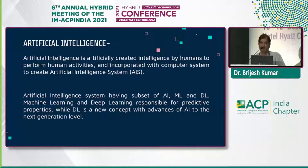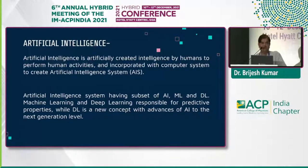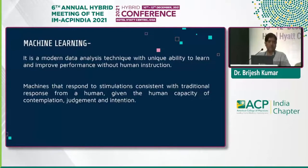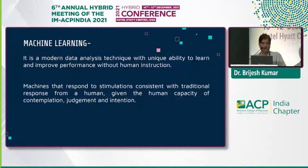Artificial intelligence systems have a subset including machine learning, deep learning, and data analytics for making intelligent decisions. Machine learning and deep learning are important as far as predictive properties are concerned by disease. Deep learning is a new concept with advances of artificial intelligence to the next generation level. Machine learning is a modern data analysis approach with the unique ability to learn and improve performance.